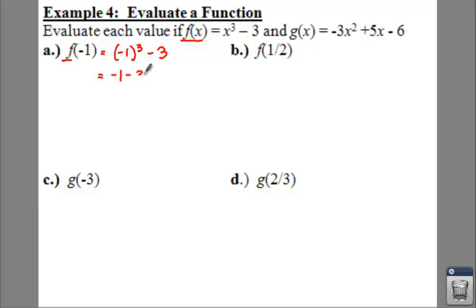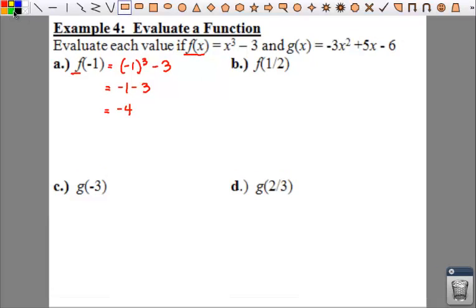So, we say -1 cubed minus 3. So, -1 to the third is -1. -1 minus 3 gives us -4. Booyah! There is your answer.